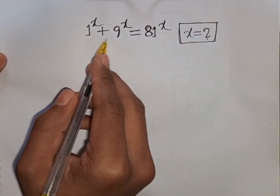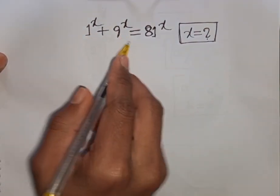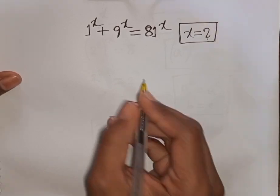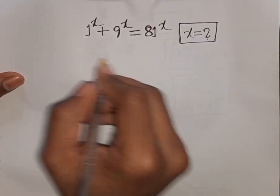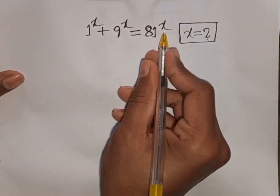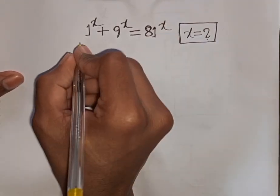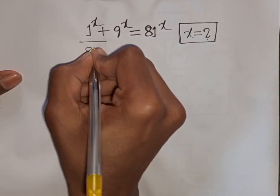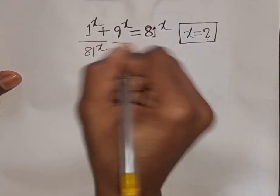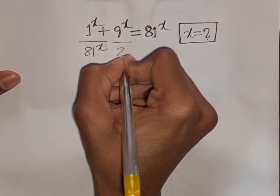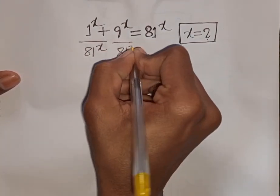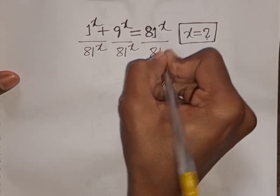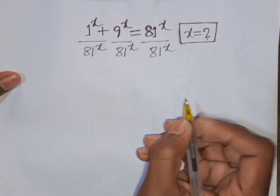1 power x plus 9 power x is equal to 81 power x. Find the value of x. At first, we divide both sides by 81 power x.